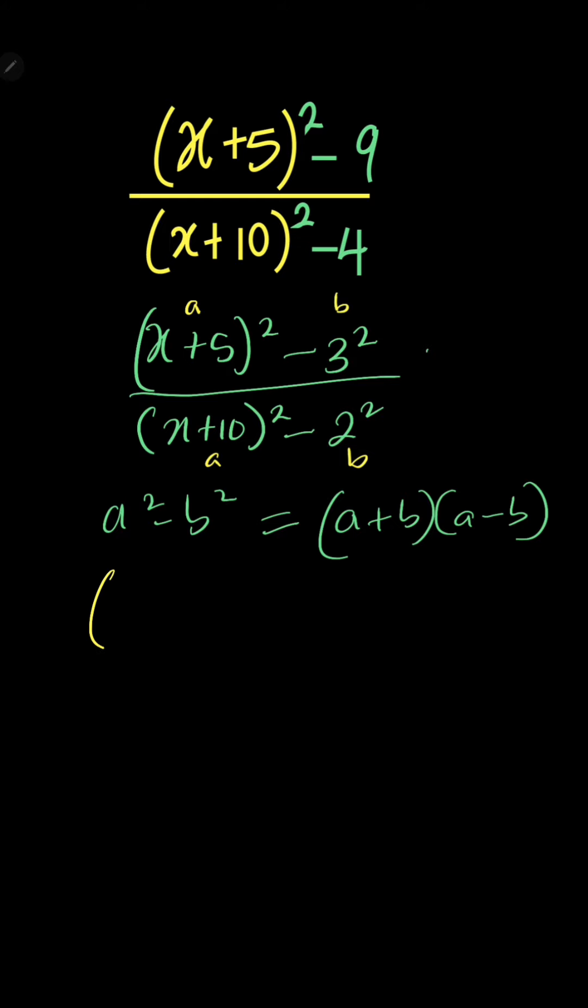So we can now have it as (x+5) plus b is 3, multiplied by (x+5) minus b which is 3. This is for the numerator.